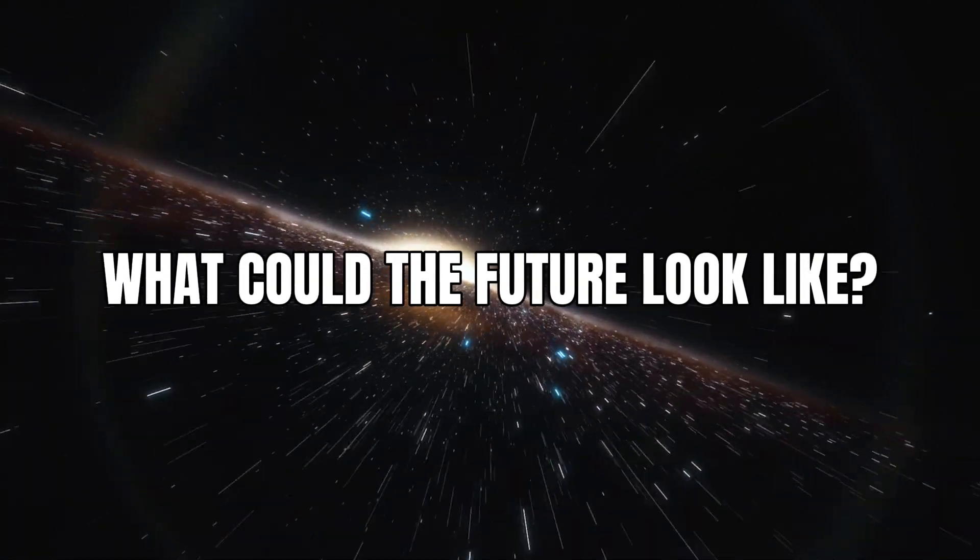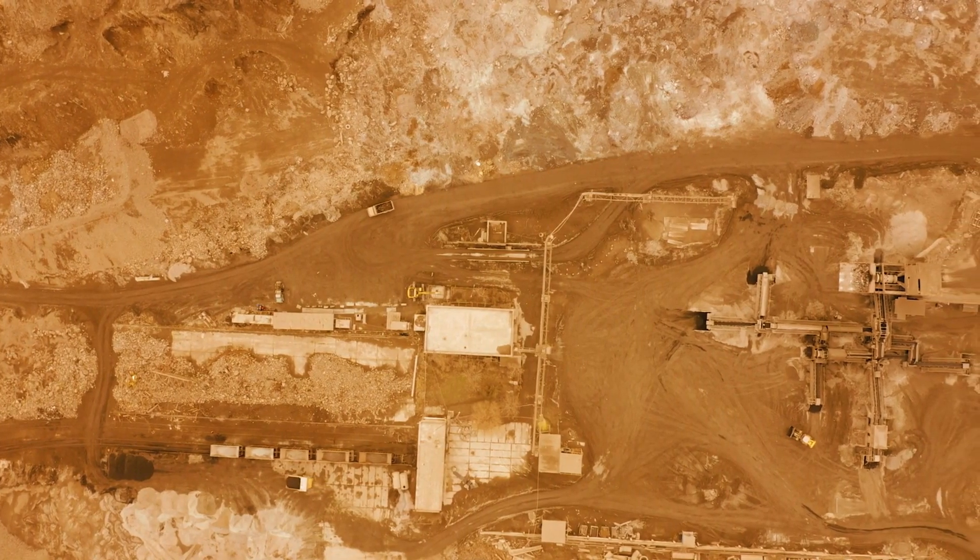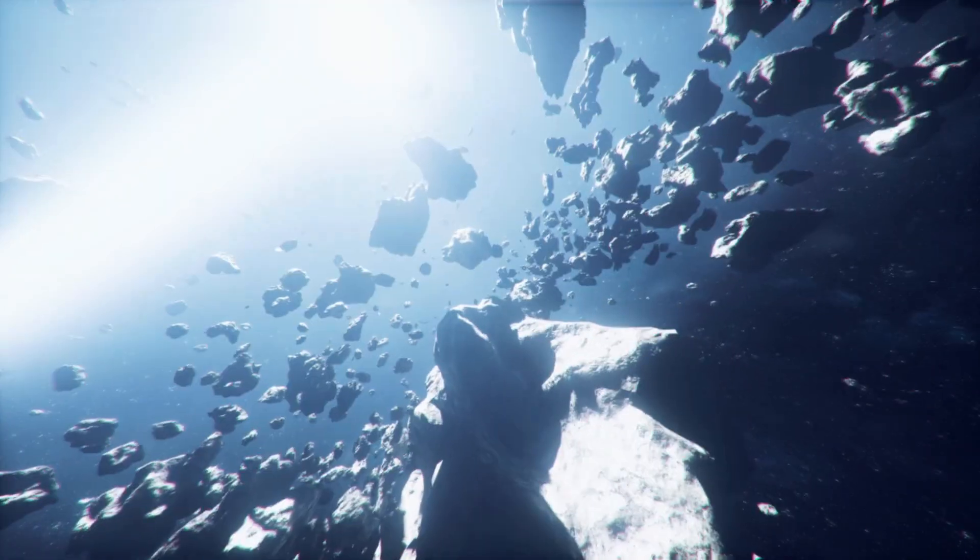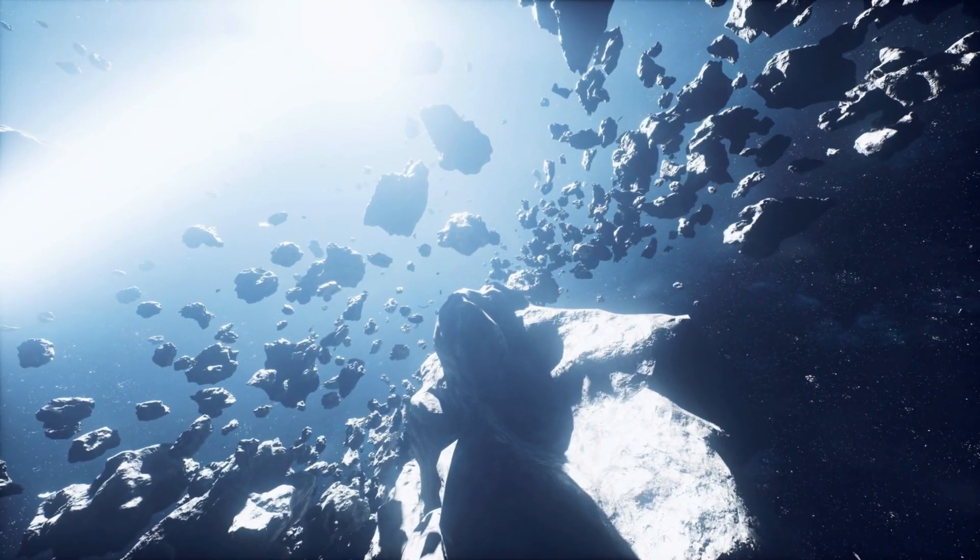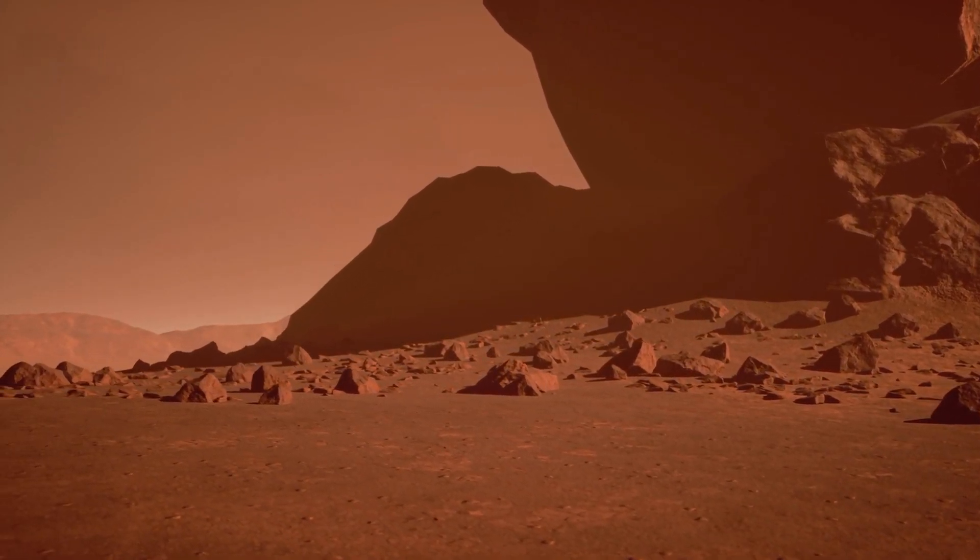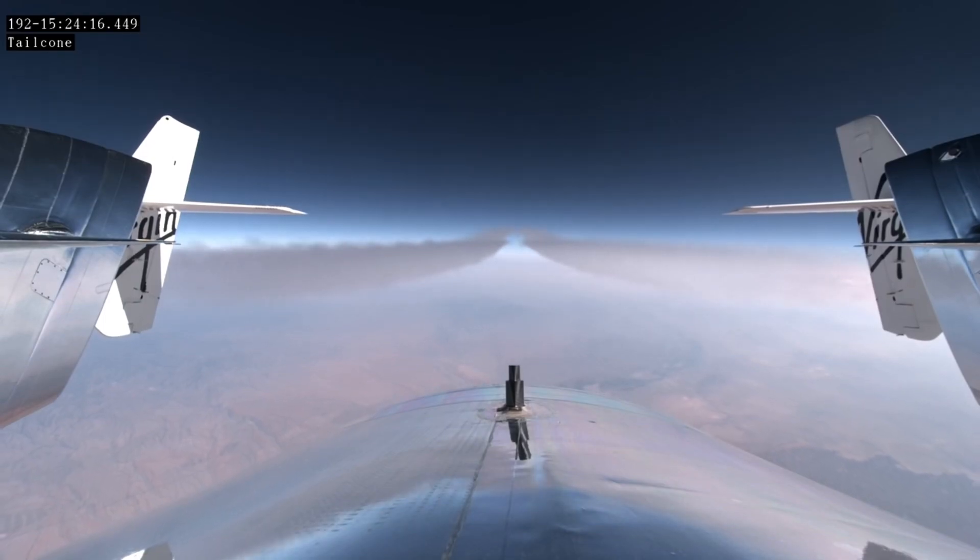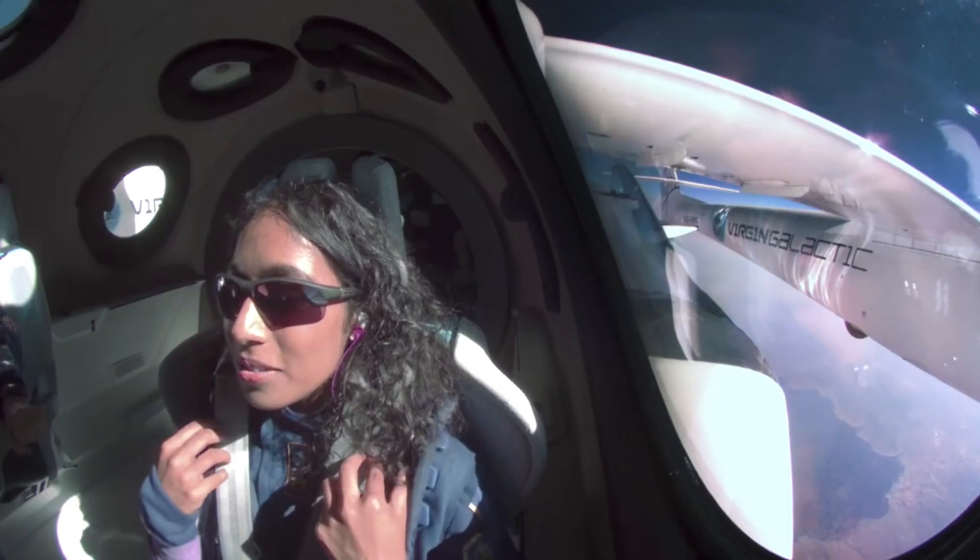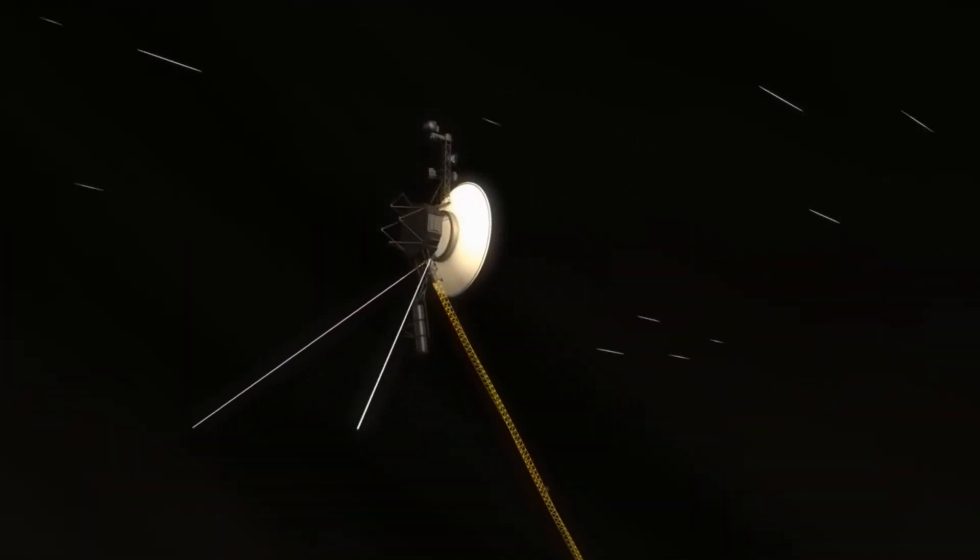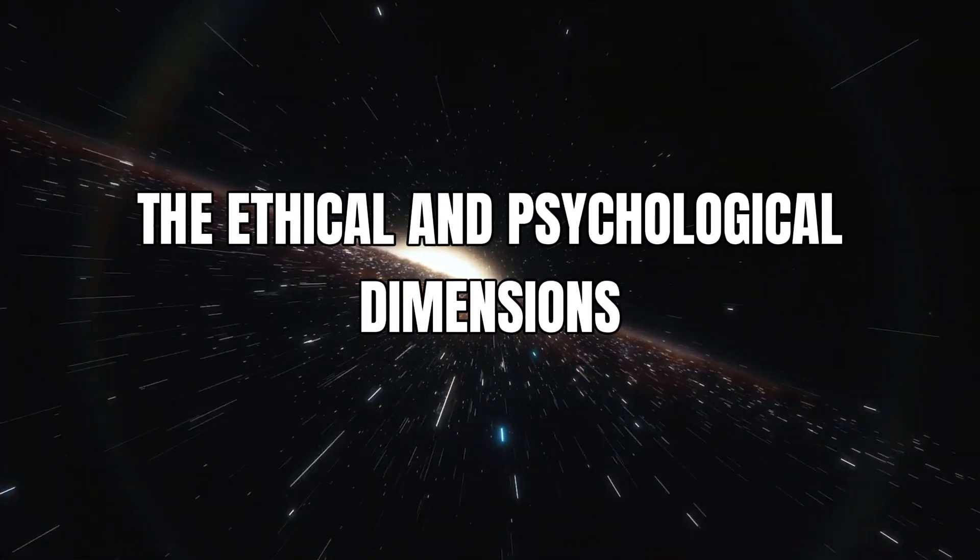What could the future look like? Let's fast forward 50 years. Picture this: Mars as a bustling colony powered by solar energy and connected to Earth via a network of laser-equipped satellites. Asteroid mining operations send real-time updates to investors back on Earth. Students on Titan attend virtual reality classrooms taught by professors on Earth. Space tourists share live feeds of their adventures, inspiring millions to dream of the stars. The interstellar internet will not just connect devices—it will connect lives, cultures, and ideas across unimaginable distances.